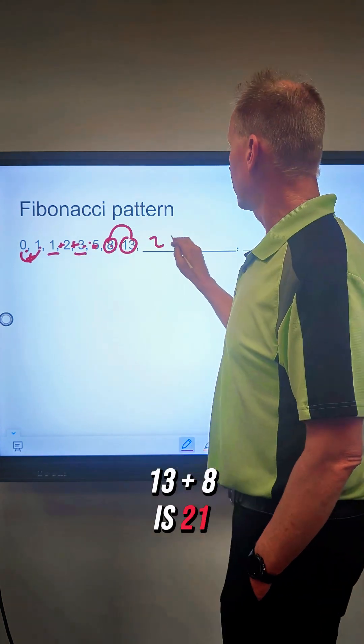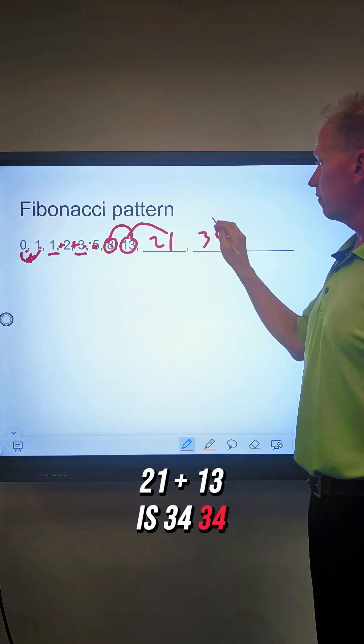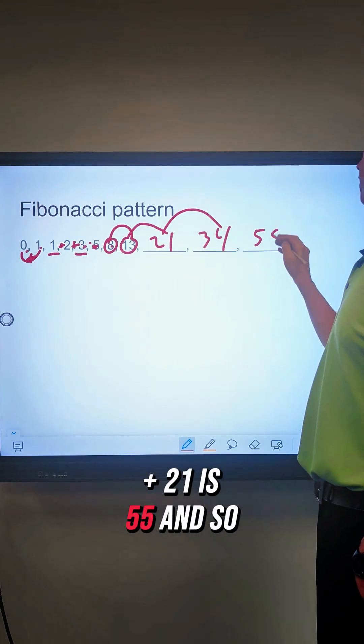So 13 plus 8 is 21, 21 plus 13 is 34, 34 plus 21 is 55, and so forth.